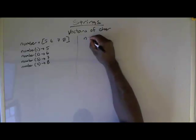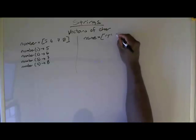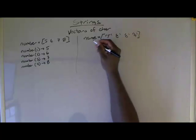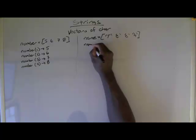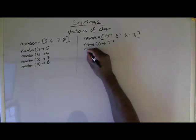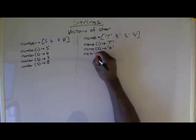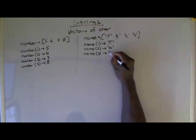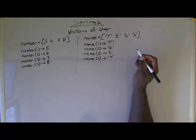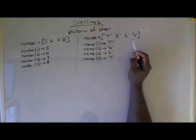By means of comparison and contrast, let's say we have a variable name defined as the vector T, E, C, H. Then name at 1 is the character T. Name at 2 is the character E. Name at 3 is the character C, and name at 4 is the character H.